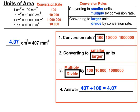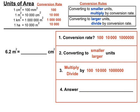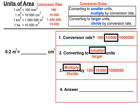Each time we go through the same decision process: what's the conversion rate, are we converting to smaller or larger units, and are we multiplying or dividing? Next example uses metres squared and centimetres squared, with a conversion rate of 10,000. Going from metres squared to centimetres squared means moving to smaller units, so we multiply by 10,000 — moving the decimal point four places to the right. The answer is 62,000 cm².